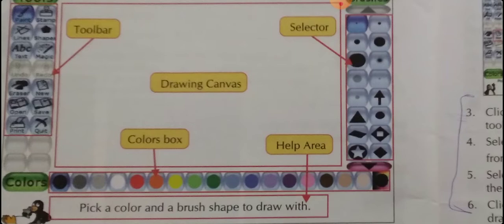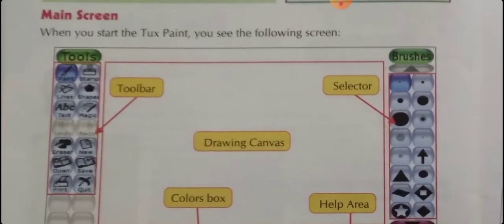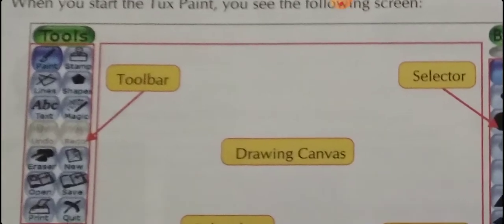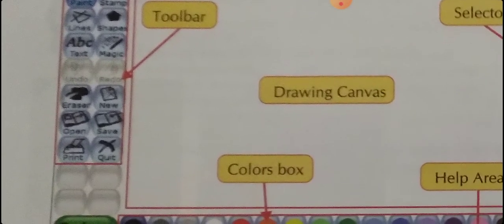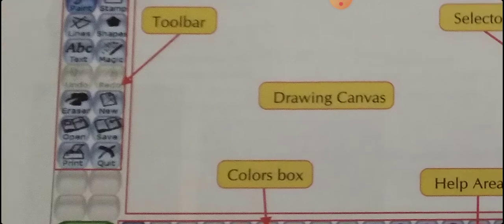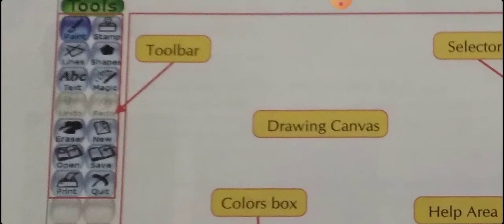Let's do the revision of all 5 components one by one. Number 1 is Toolbar. Toolbar contains various tools — you can see many tools here. By clicking on a tool you can select it. The toolbar contains editing tools and control tools. These tools reside in the toolbar, that's why its name is toolbar.